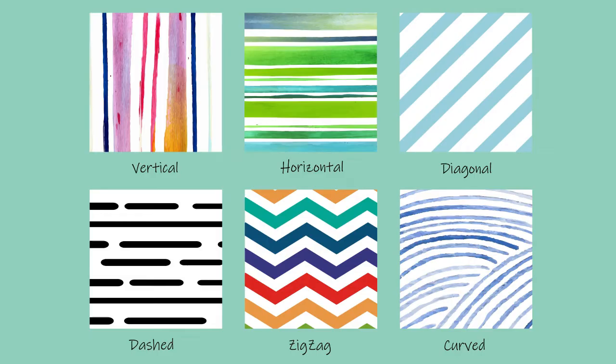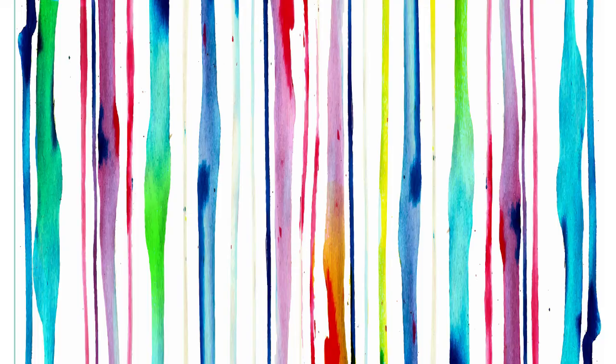You get various kinds of lines. Let's look at some basic types. We often see vertical lines, horizontal lines, diagonal lines, dashed lines, zigzag lines, and curved lines.